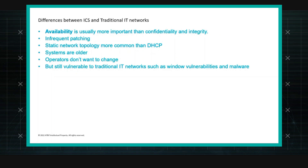There are key differences between ICS and traditional IT networks. ICS operators typically consider availability more important than confidentiality and integrity, whereas traditional IT networks tend to prioritize confidentiality and integrity. Holistically, having clean water and power generation available is critical — those systems need to be up nearly 99% of the time.